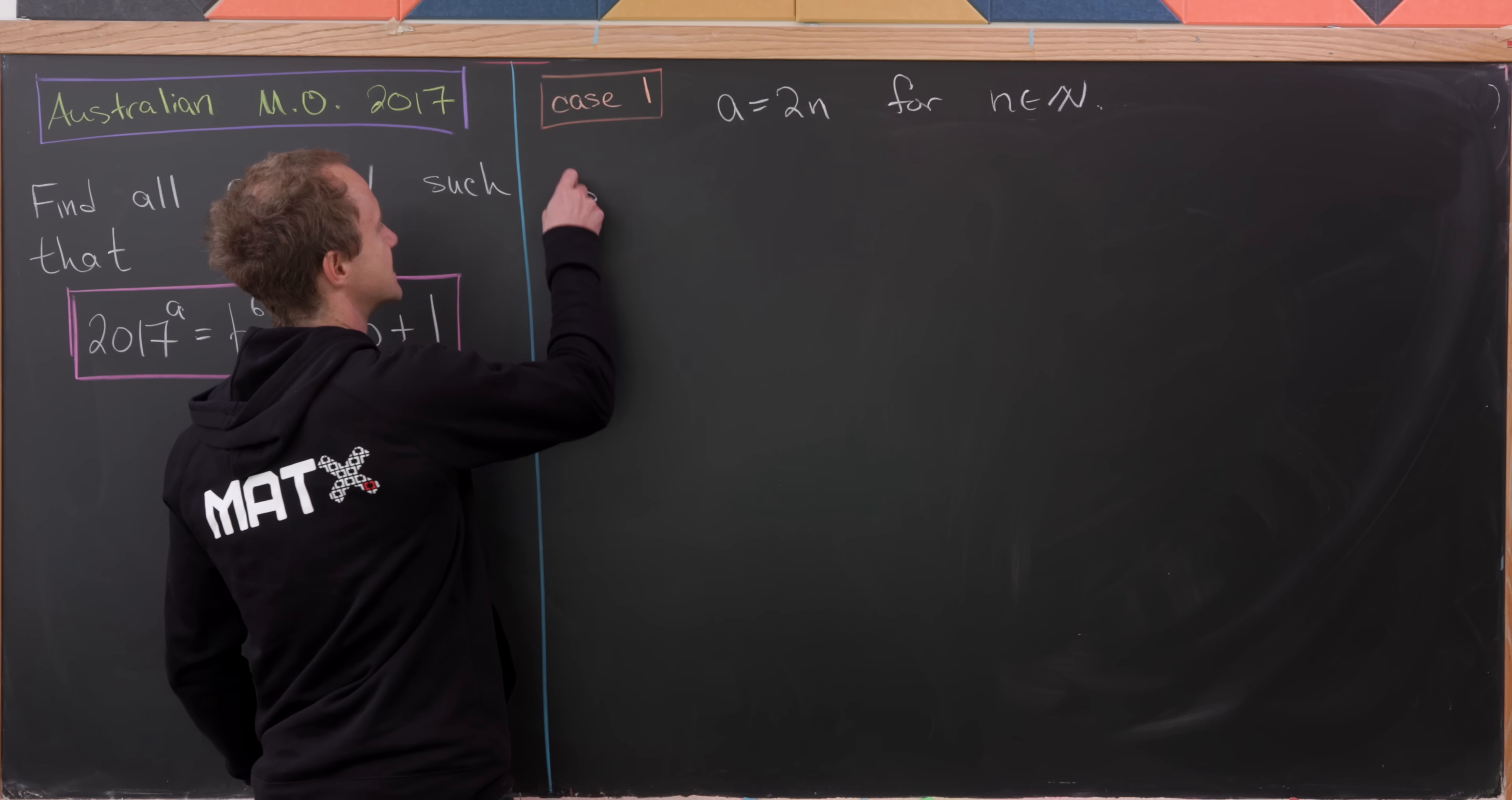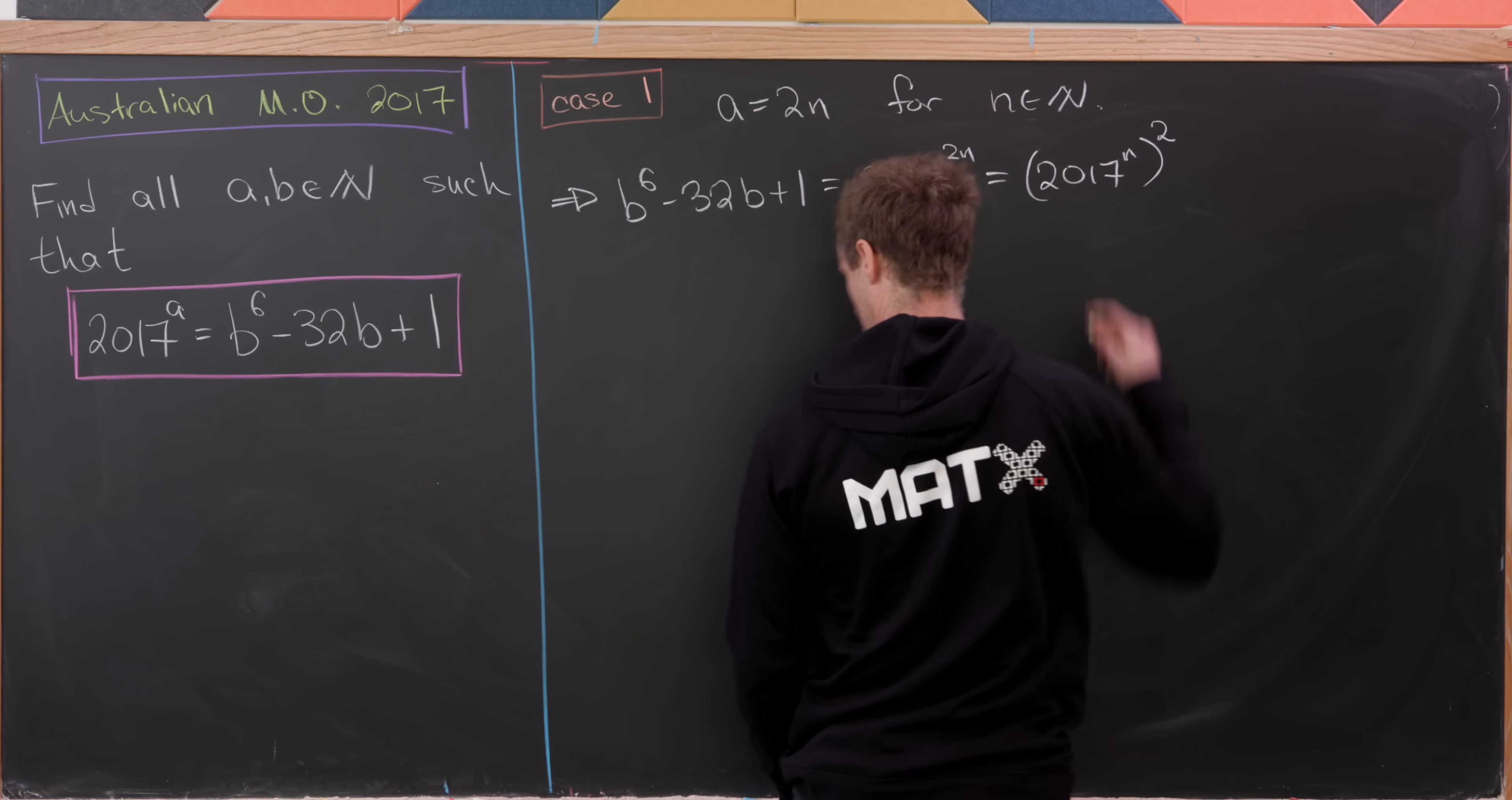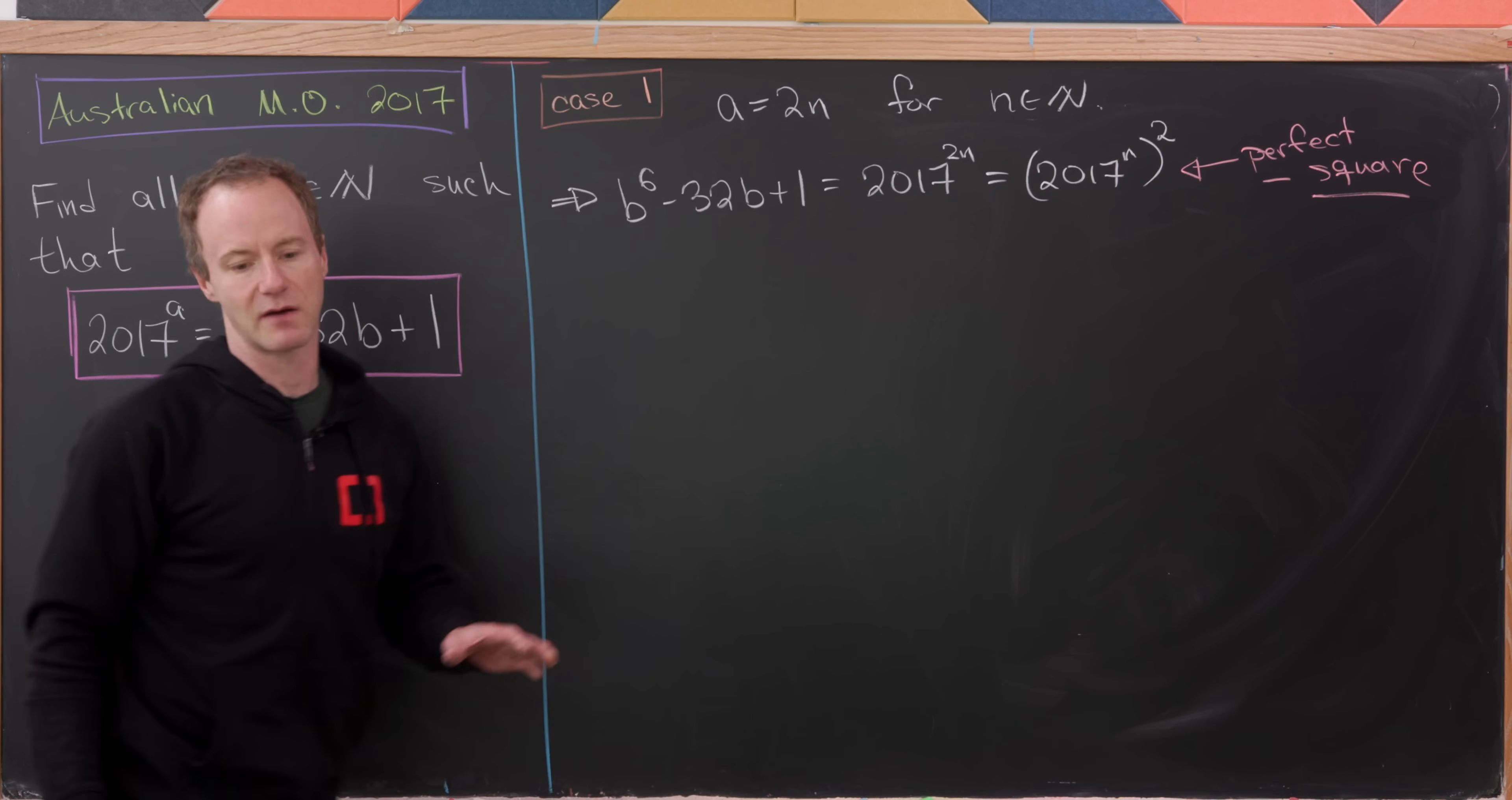Now let's observe that we'll have B^6 minus 32B plus 1 in this case equal to 2017^(2N), which is of course equal to (2017^N)^2. And you might say, well, why are we going to write it like that? That's because we're going to use the fact that this is a perfect square.